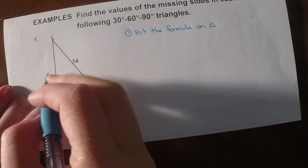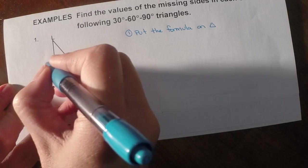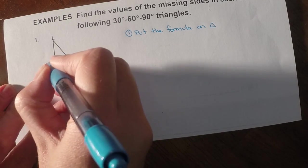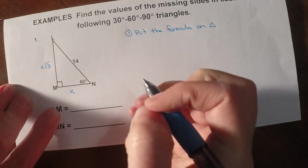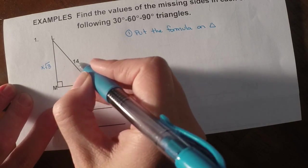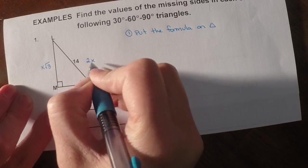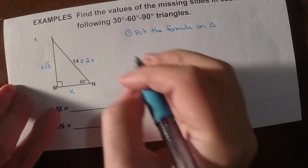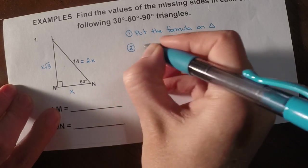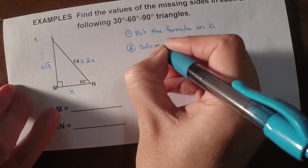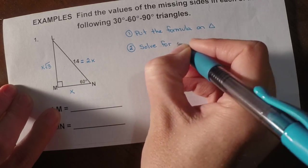So if I put it on here, the short leg is always x, the height or the long leg is x root 3, and then over here, the hypotenuse is 2x. Well, just like before, this is where our equals is going to go. So our second step, as always, is going to be to solve for x in our formula.